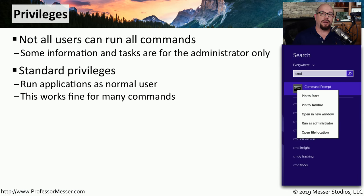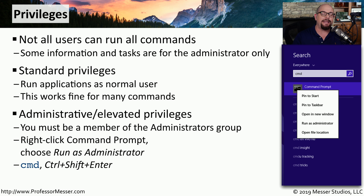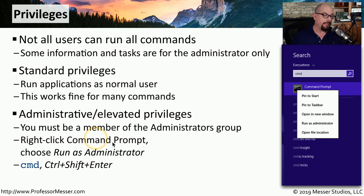The Windows operating system has two separate privileges: one for the user and one for the administrator. For most of what you do, you'll be using standard privileges, but there are certain applications and functions in the operating system that need elevated permissions. In those cases, you'll want to run as an administrator. To run the command prompt as an administrator, you'll first need to be a member of the administrators group, then right-click the command prompt and choose Run as administrator.